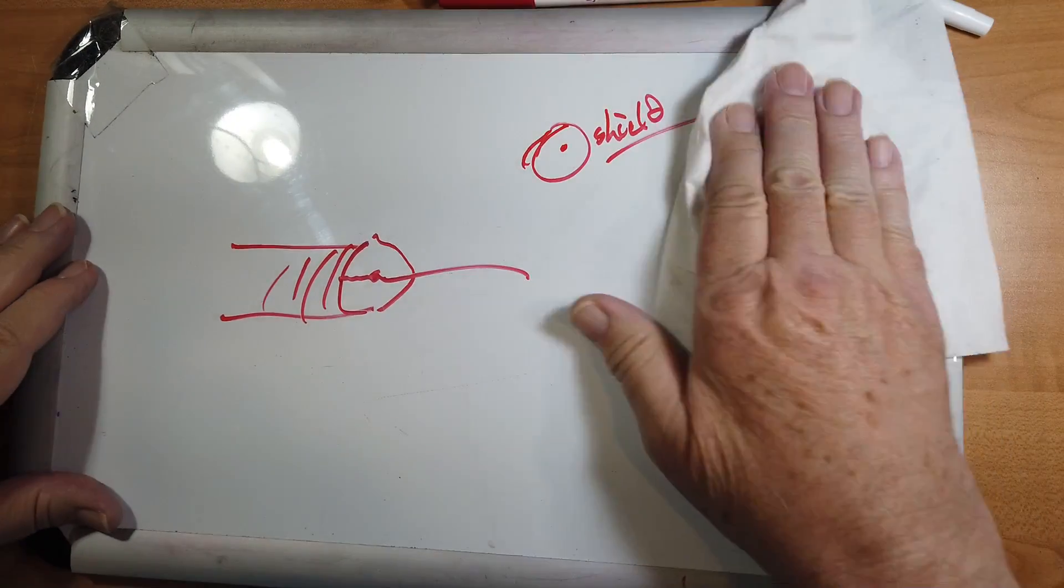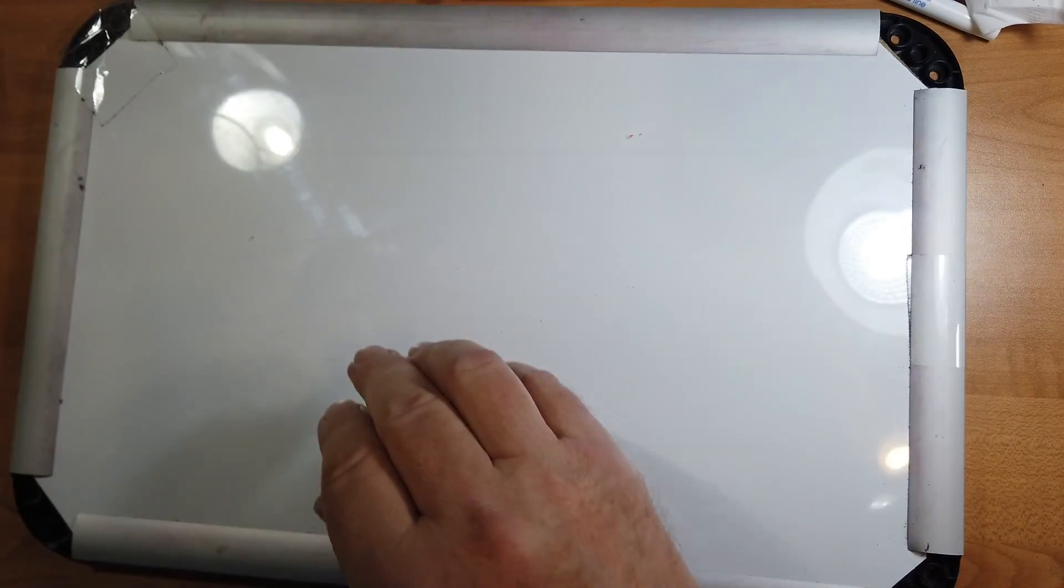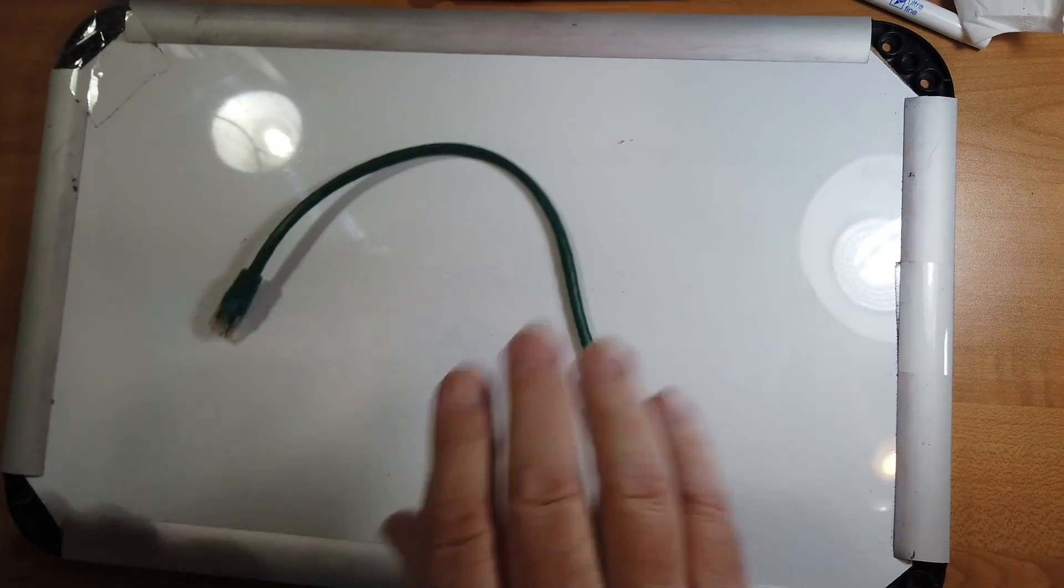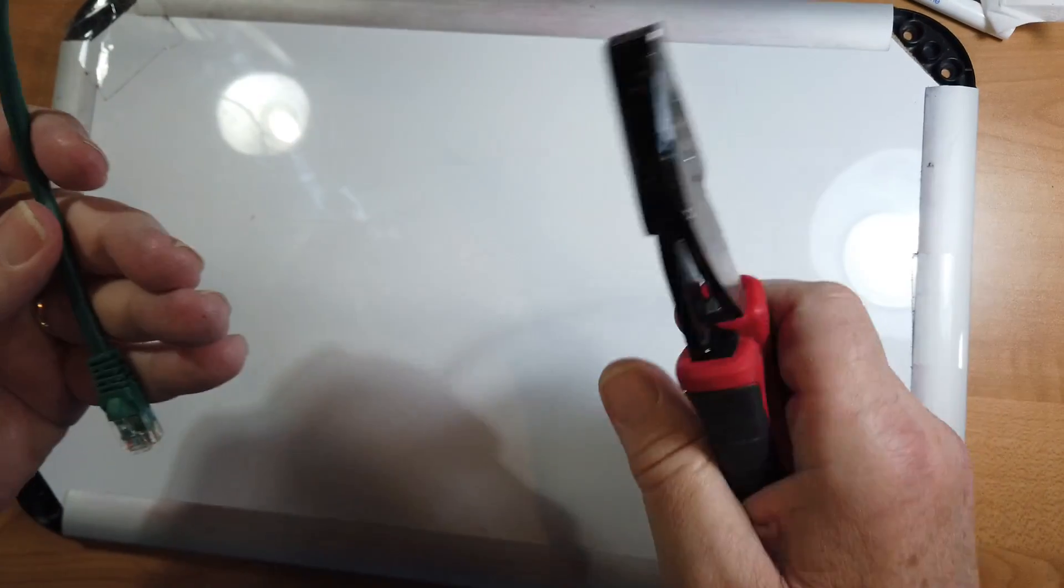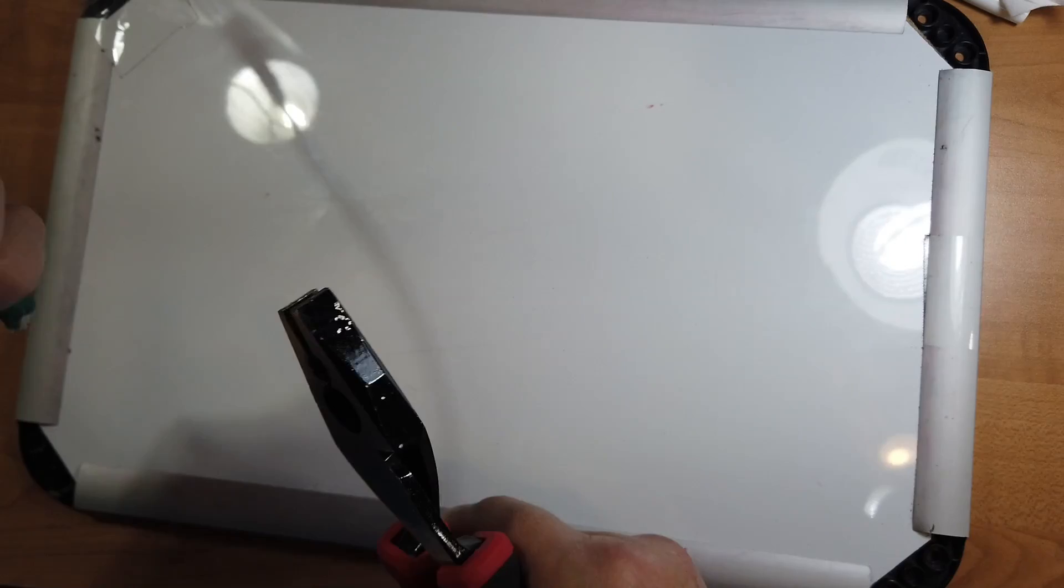Actually, the way CAT6 cable works is a little different. Let's take this sacrificial CAT6 cable. I think it's actually CAT5e, but it's built the same way. It's a one foot.